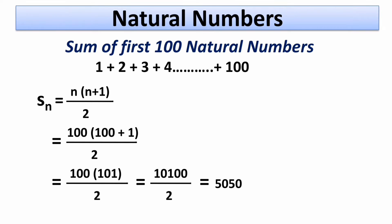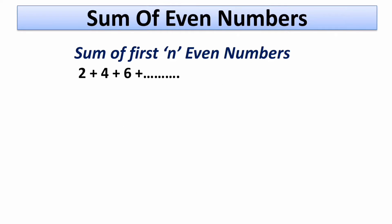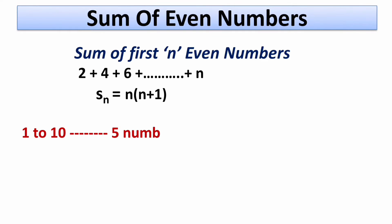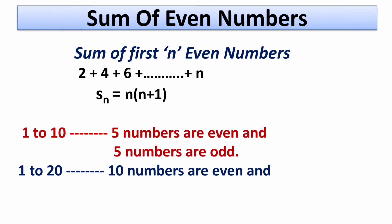I hope you liked this trick. Now let's see how to find the sum of first n even numbers and sum of first n odd numbers. For even numbers 2 plus 4 plus 6 up to plus n, we use the formula Sn equals n times (n plus 1). Remember: when we consider numbers from 1 to 10, we have 5 even and 5 odd numbers. Similarly, from 1 to 20, we have 10 even and 10 odd numbers.